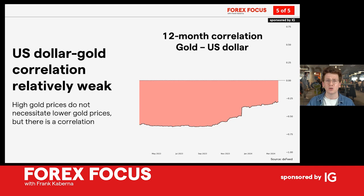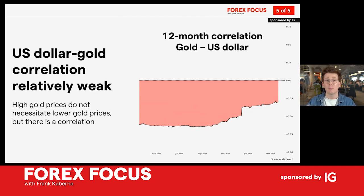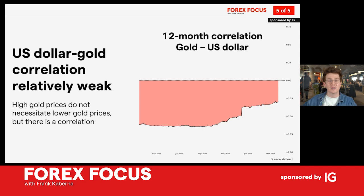Think about it this way: if central banks like the Fed, the Bank of England, and the European Central Bank are all talking about rate cuts and speaking dovishly, but the Bank of England and the ECB are more dovish than Fed Chair Powell and the Fed — well, all of that dovish talk of lower interest rates might be good for gold, but the US dollar might also stay strong relative to those other currencies.